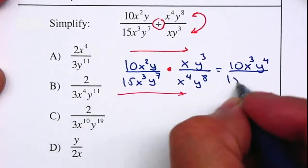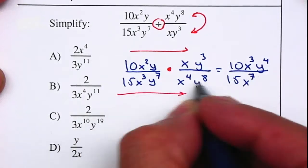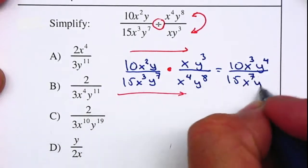Denominator, we have a 15. x³ and x⁴, we have a total of x⁷. y⁷ and y⁸ gives me y¹⁵.